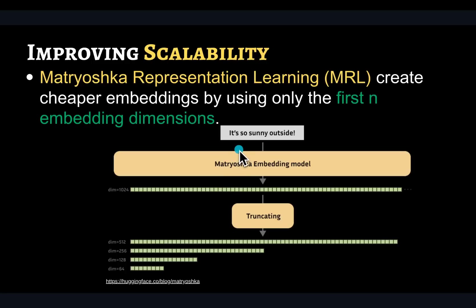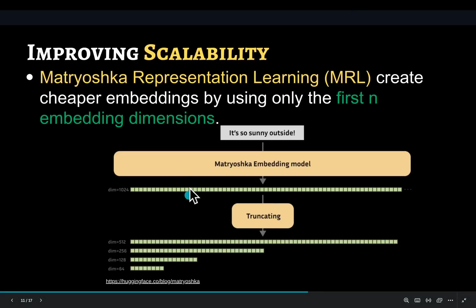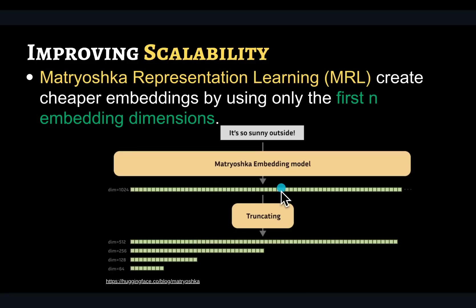A second approach that has gotten a lot of attention lately is called Matryoshka representation learning. It's a new embedding model technique that helps you reduce the size of your embedding vector. You can compute embeddings in the full representation — for example, 1024 dimensions — but instead of storing all 1024 dimensions, you just take the first 512, 256, or 128 dimensions. Depending on your need and storage requirements, you can store a subset of the computed dimensions. OpenAI uses a similar approach for their newer embedding models, and open-weight models like Nomic embeddings also use this representation, but there is still some loss of accuracy when reducing the number of dimensions.